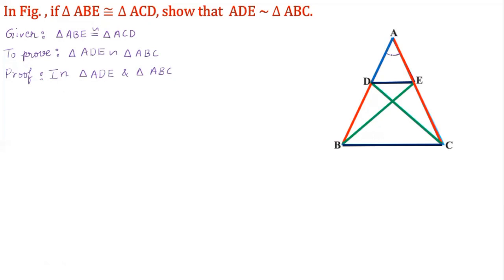Angle A is common for both the triangles. So we can write angle DAE is equal to angle BAC. The reason is: it is a common angle.